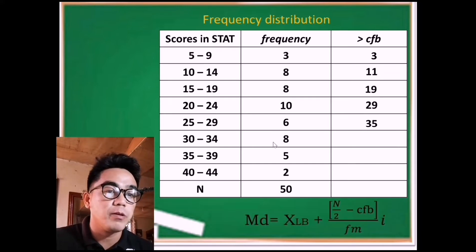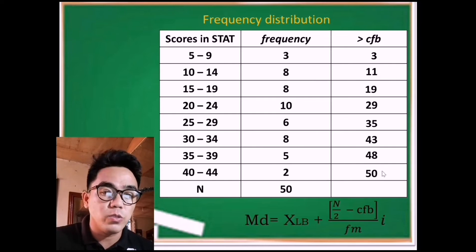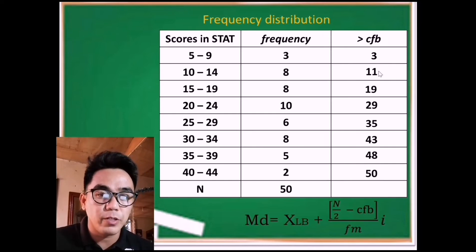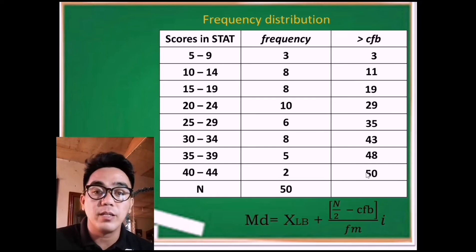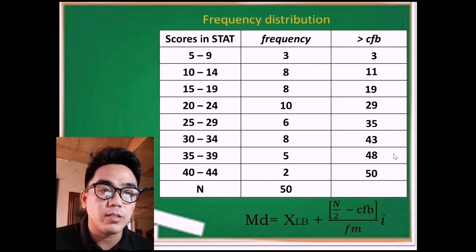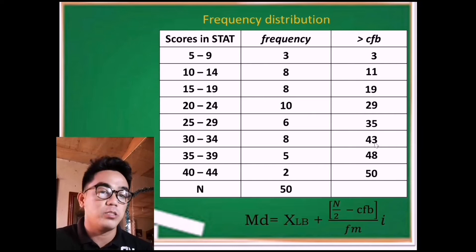Continuing: 29 plus 6 is 35, 35 plus 8 is 43, then 43 plus 5 is 48, and finally 50. To verify correct values: check that the first value is 3 — the same as the first frequency — and that 50 is the end of the cumulative frequency before the median class. This is how we properly fill in all values of the cumulative frequency before the median class.